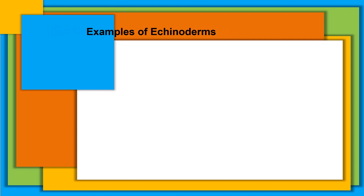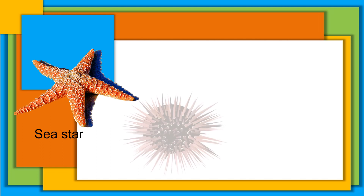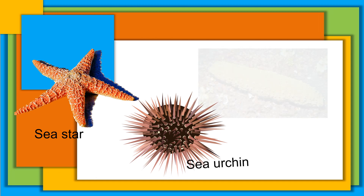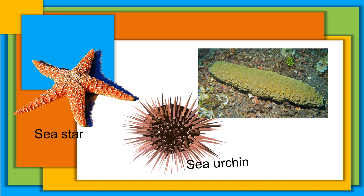Here are some examples of echinoderms: sea star or starfish, sea urchin, and sea cucumber.